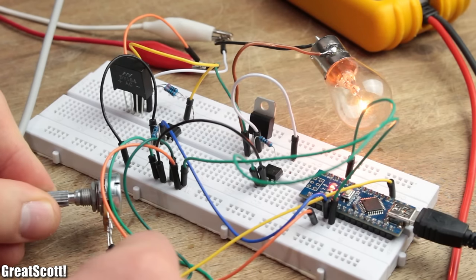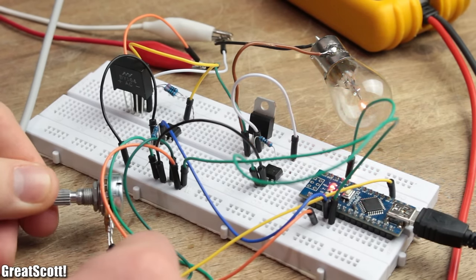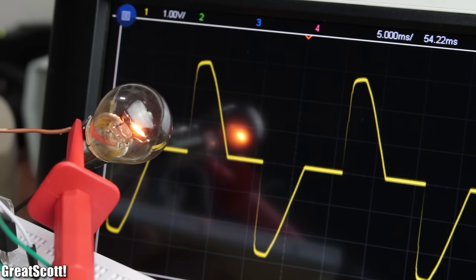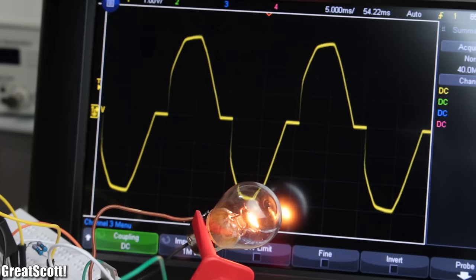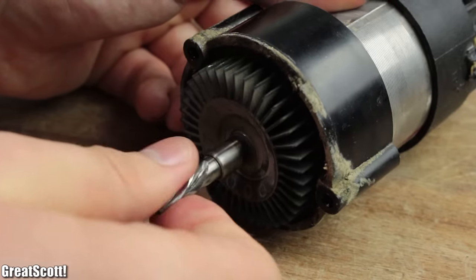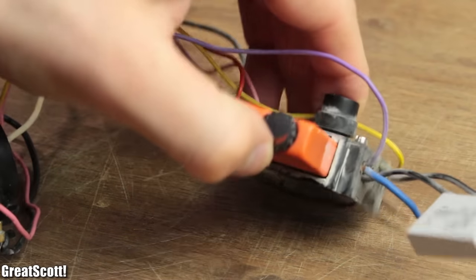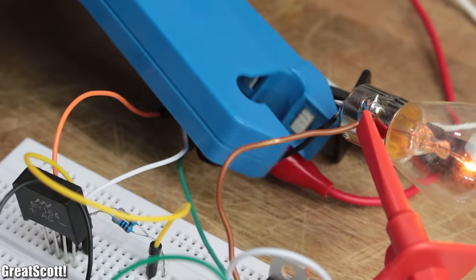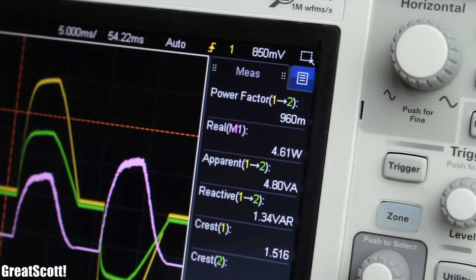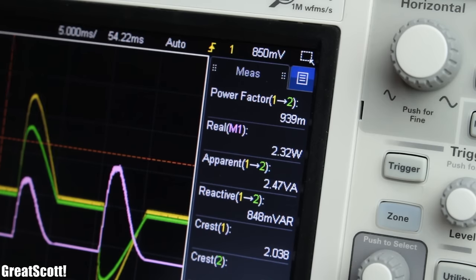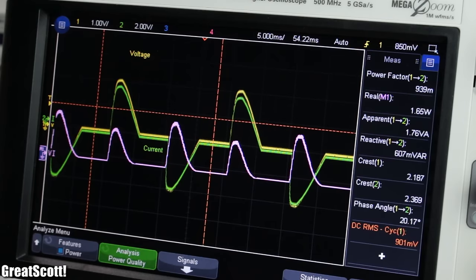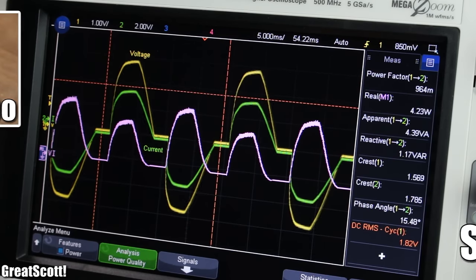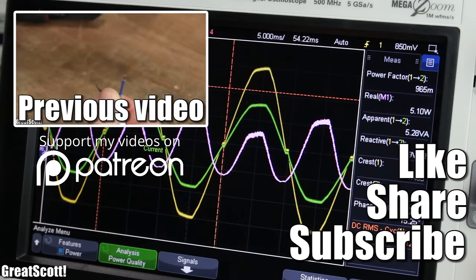And just like that this small phase angle control circuit is complete, but still has a couple of bugs though since this is only a test circuit. This kind of power regulation gets also used with heating elements or to adjust the speed of a universal motor from a drill. One disadvantage of this method though is the constantly decreasing power factor due to the non sinusoidal current, but that is the subject for another video.